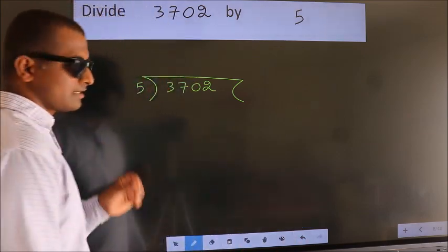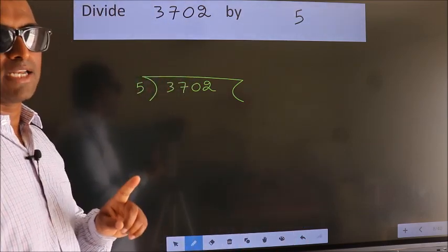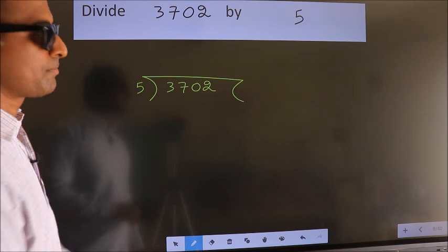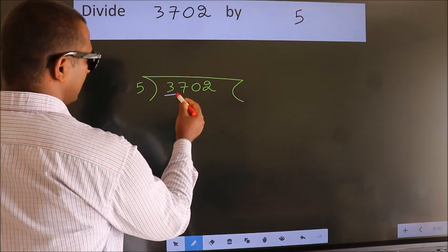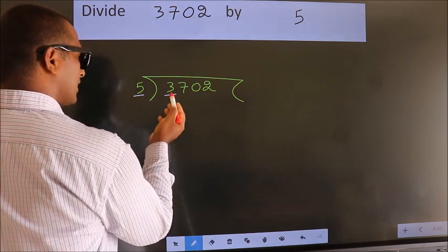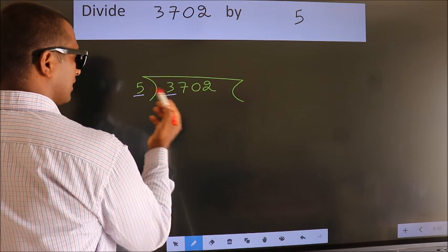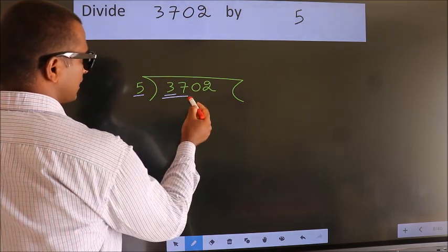This is your step 1. Next, here we have 3, here 5. 3 is smaller than 5, so we should take two numbers: 37.